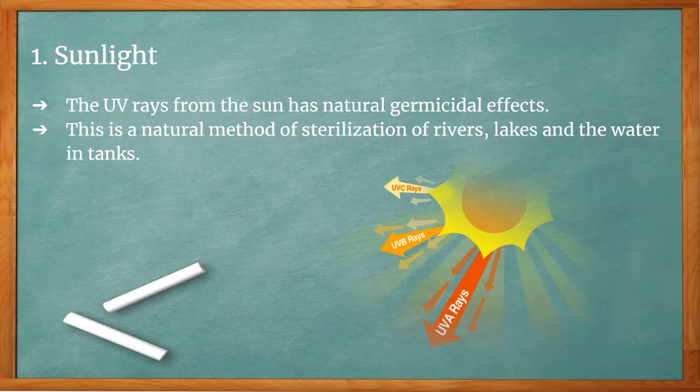Sunlight: the UV rays from the sun have natural germicidal effects. This is a natural method of sterilization of rivers, lakes, and water in tanks.